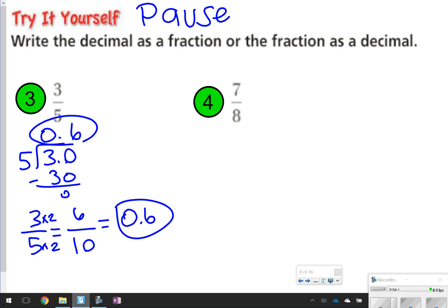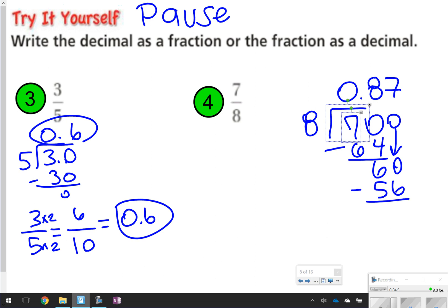Number 4, though, you have to do division, because 8 will not go into 100 evenly. So I'm going to take 7, divide by 8. 8 goes into 7, 0 times. I'm going to add a decimal drop a 0. 8 goes into 70, 8 times. 8 times 8 is 64. 6 left over. Bring another 0 down. 8 goes into 60, 7 times. 7 times 8 is 56. I got 4 left over. One more 0 should do it for me. 8 into 40 is 5. So my answer for number 4 is 0.875.